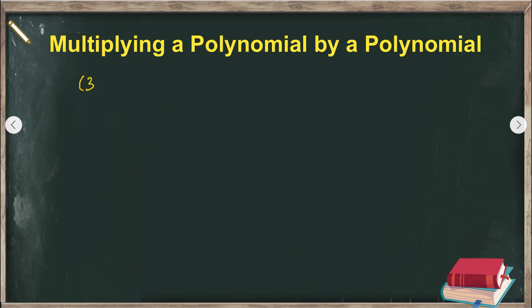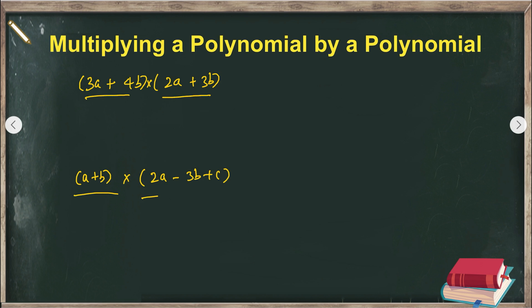Chapter number 9, algebraic expressions and identities, has 4 subtopics. Here we will be particularly dealing with the multiplication of algebraic expressions, and specifically we'll be looking at multiplying a polynomial by a polynomial. There can be questions of two types: when a binomial is multiplied by a binomial, or a binomial multiplied by a trinomial.